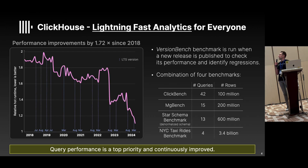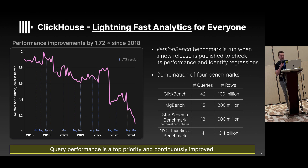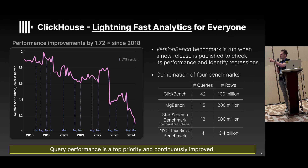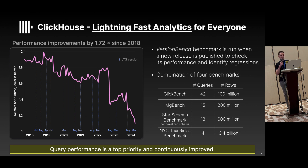Optimizing performance is a never-ending story, a never-ending challenge that involves many difficult trade-offs. It is still possible to continuously improve performance through the history of ClickHouse — the chart goes down, and lower is better. It is based on the Versions Benchmark, which combines four different datasets and four different benchmarks, including ClickBench, MGBench, Star Schema Benchmark, and New York Taxi Rides. Over the past six years we improved performance on average by 1.7 times — and this is just the beginning.